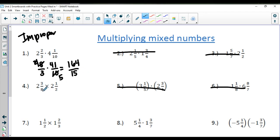In number 4, 8 times 2 is 16 plus 3 is 19 eighths. 2 and a half is going to become 5 halves. And unfortunately, there's nothing that I can do to reduce. So 19 times 5 is 95. And 8 times 2 is 16.